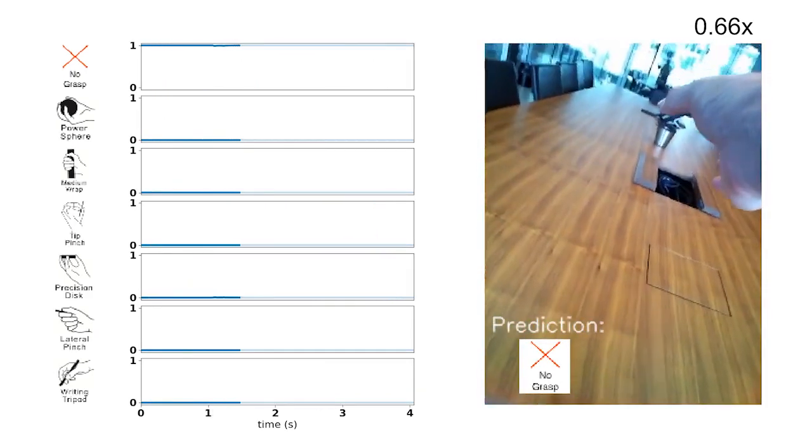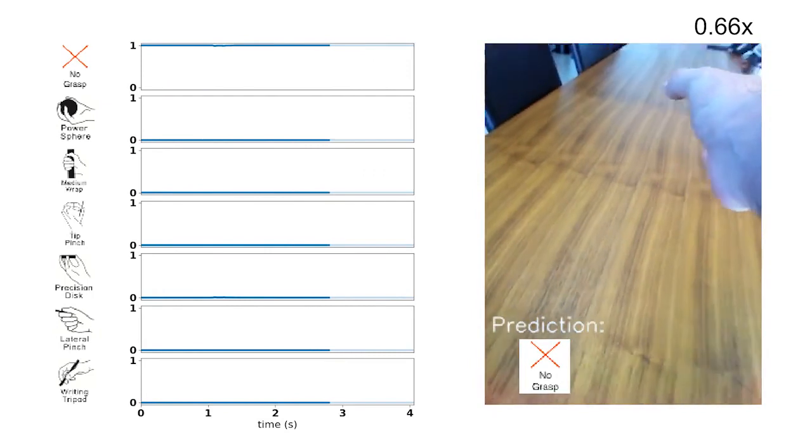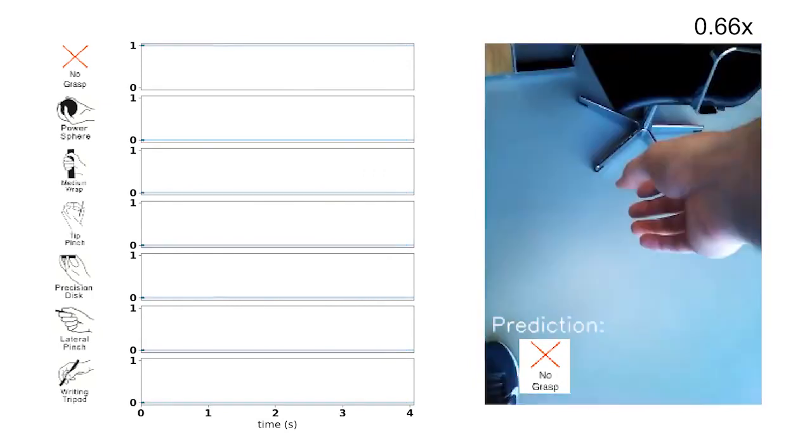We show that our system does not react to movements of the hand, as we see here in a no-grasp being performed toward an empty table.